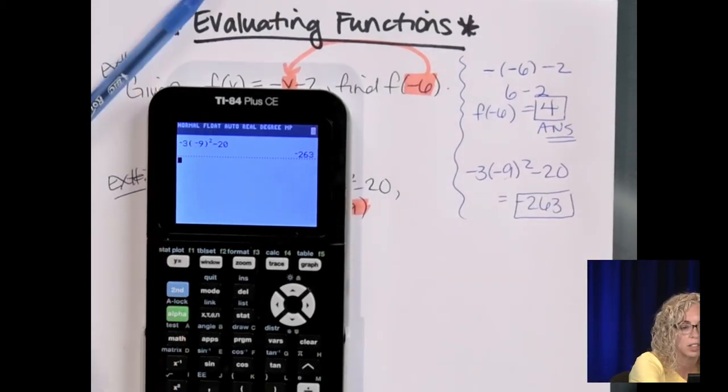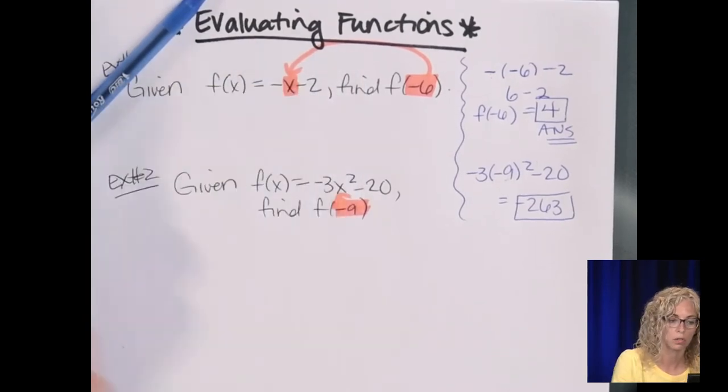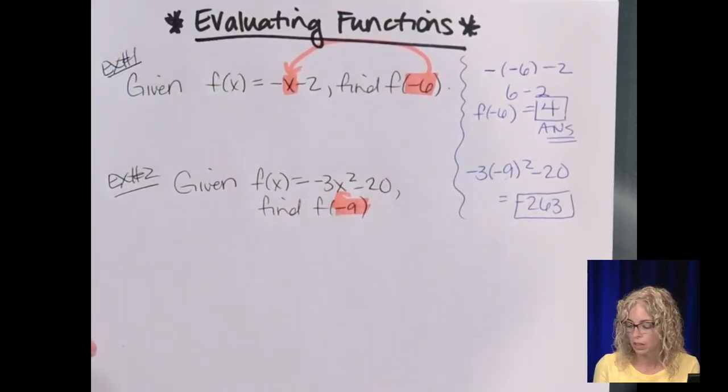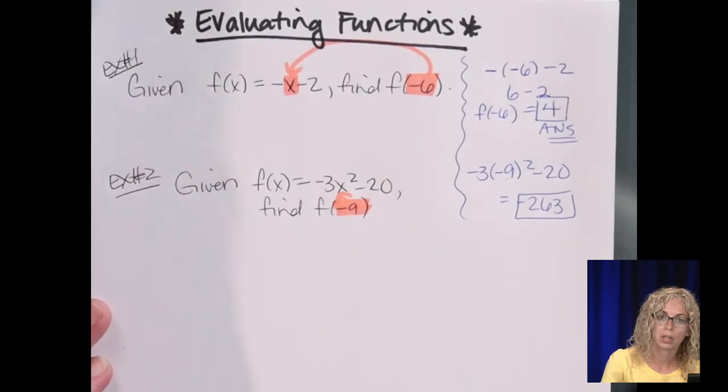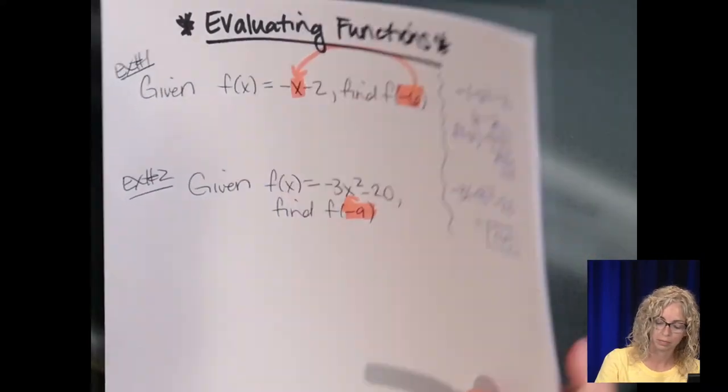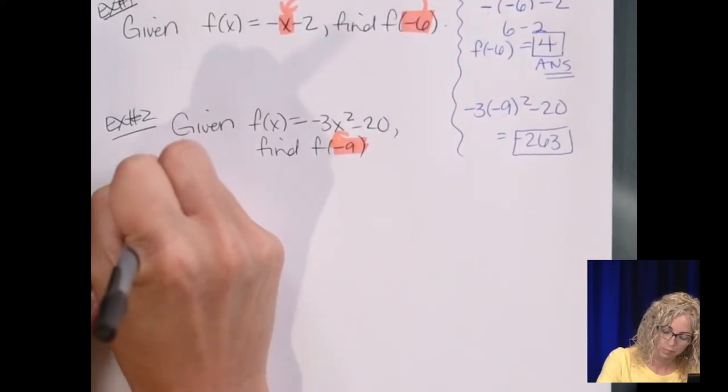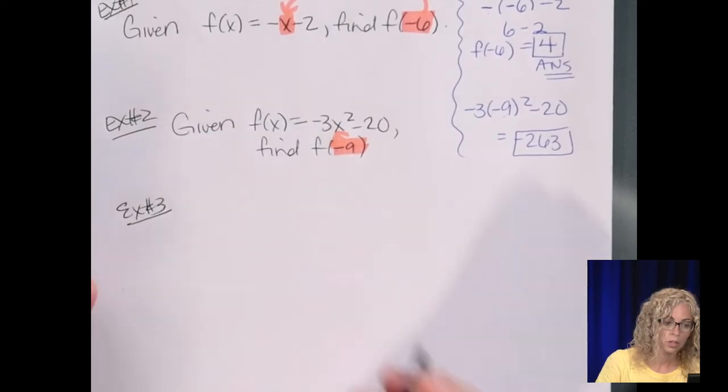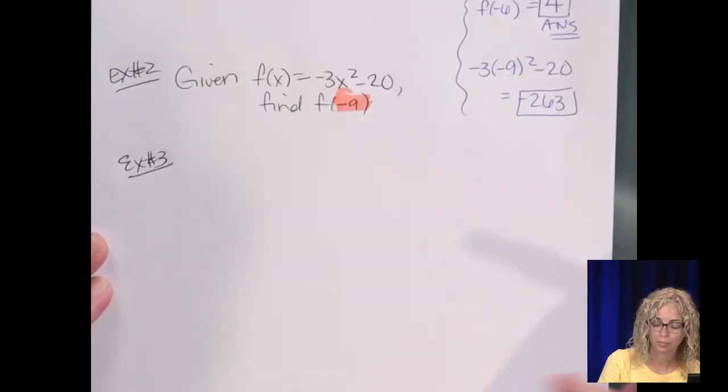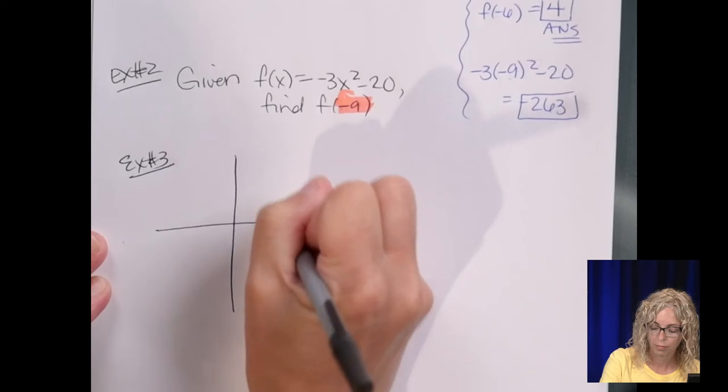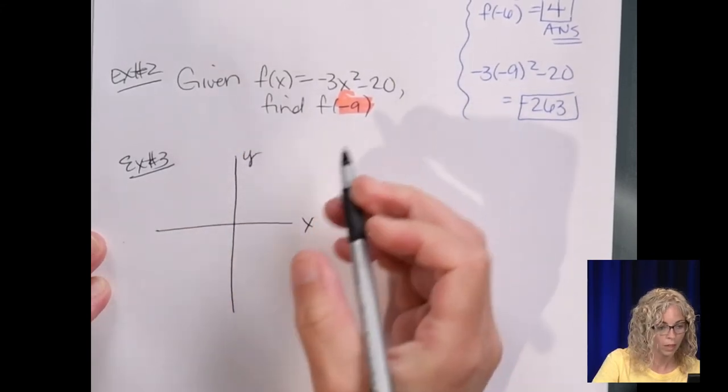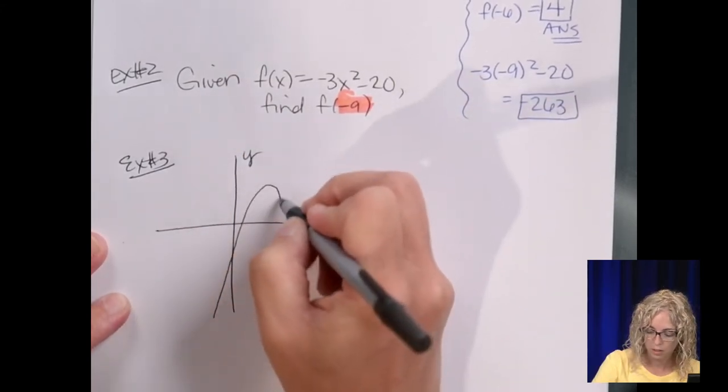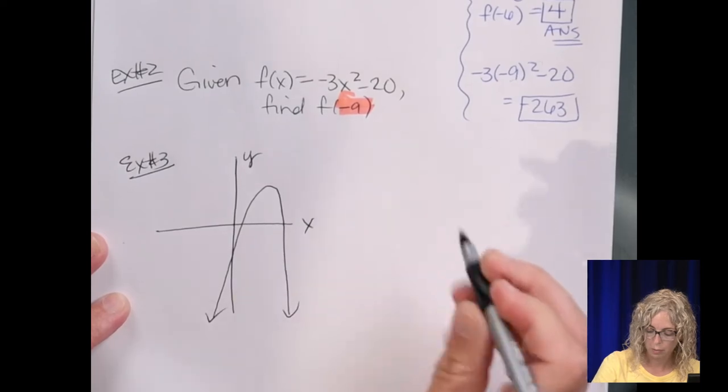Okay, so that's your level one, level two, and then we move to evaluating functions from a graph. So example number three is going to be graphically. So let's sketch a parabola. And it looks like this. Okay, it doesn't have to be perfect.